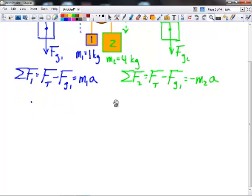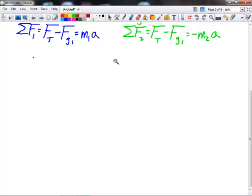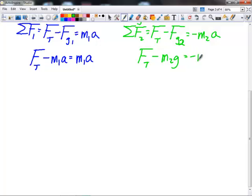Our goal here is to solve for the acceleration. So we're going to expand this out and see what we're really working with. I'm going to have FT, which we don't know, minus M1G equals M1A. And then on the right-hand side, FT minus M2G equals negative M2A.